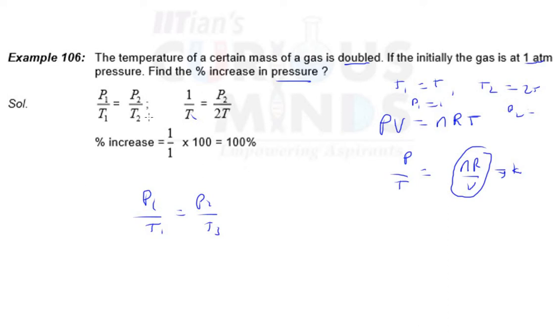So what is the percent increase? Whenever a pressure gets doubled, whenever anything gets doubled, the percent increase is always 100%. Very important concept. For example, if cost price is 300 rupees and selling price is 600 rupees, the profit is 100% because it doubled. The profit formula is selling price minus cost price upon cost price into 100.